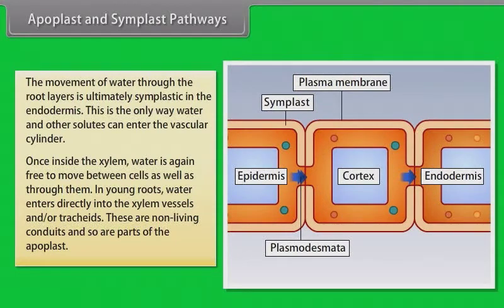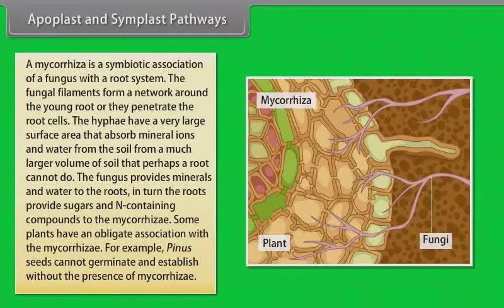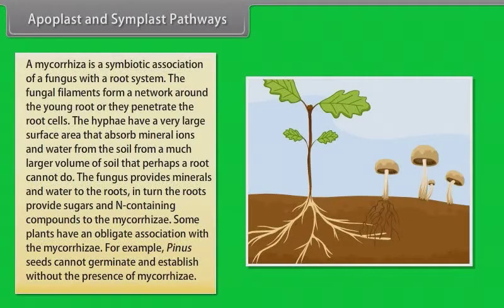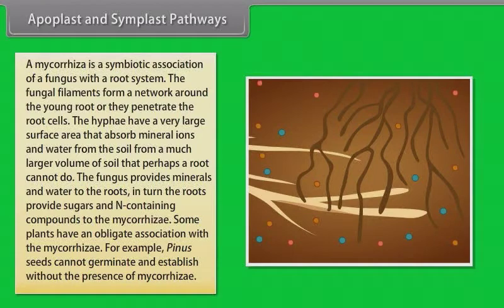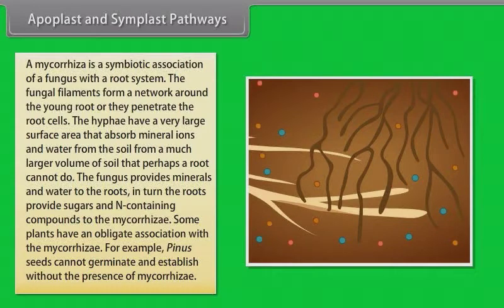Some plants have additional structures that help in water and mineral absorption. A mycorrhiza is a symbiotic association of a fungus with a root system. The fungal filaments form a network around the young root or penetrate the root cells. The hyphae have a very large surface area that absorbs mineral ions and water from the soil from a much larger volume of soil than perhaps a root could. The fungus provides minerals and water to the roots; in turn, the roots provide sugars and nitrogen-containing compounds to the mycorrhizae. Some plants have an obligate association with mycorrhizae — for example, Pinus seeds cannot germinate and establish without the presence of mycorrhizae.